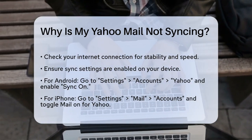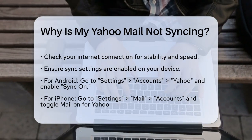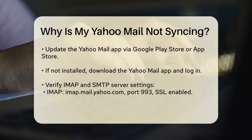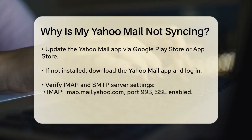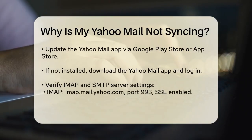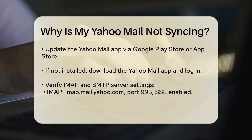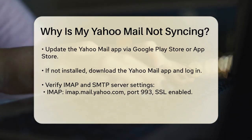For iPhone users, go to Settings, scroll down to Mail, select Accounts, choose your Yahoo account, and make sure the toggle for Mail and any other data like Contacts or Calendars is turned on.